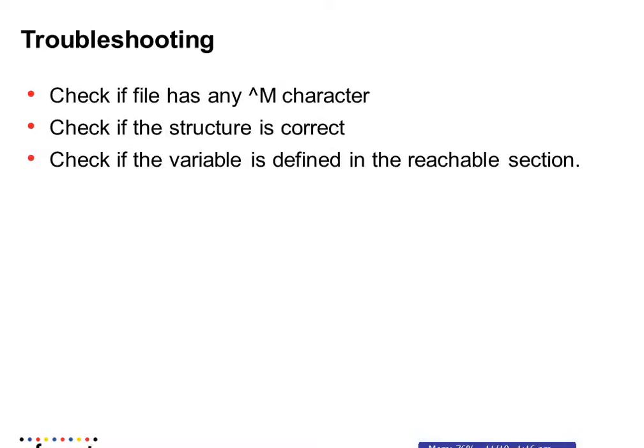Some troubleshooting tips for parameter file issues: First, verify if the parameter file has any control-M characters — if so, run dos2unix on the file. Second, check if the syntax and structure of the parameter file are correct. Third, if a variable is not being read in a workflow, verify it is defined in a reachable section. A single parameter file can have multiple workflow entries — if variable 1 is defined under workflow 2's section, workflow 1 will not be able to read it.